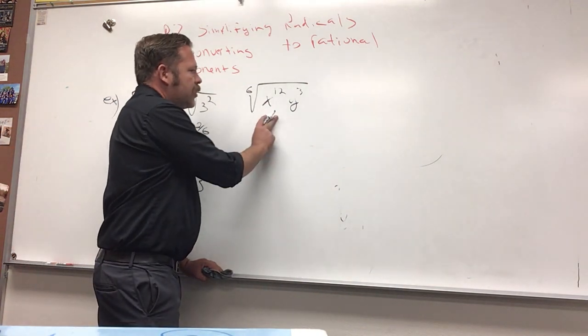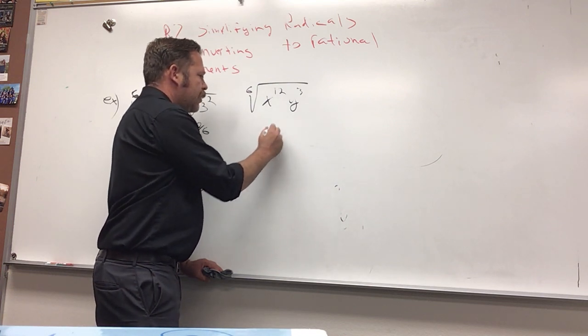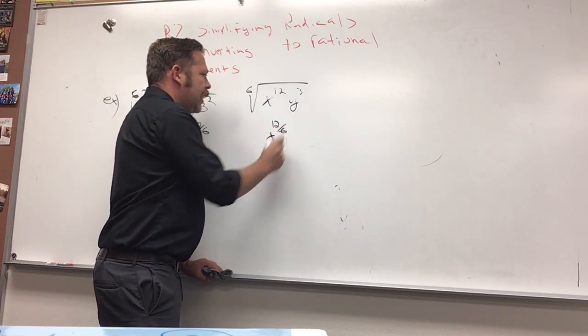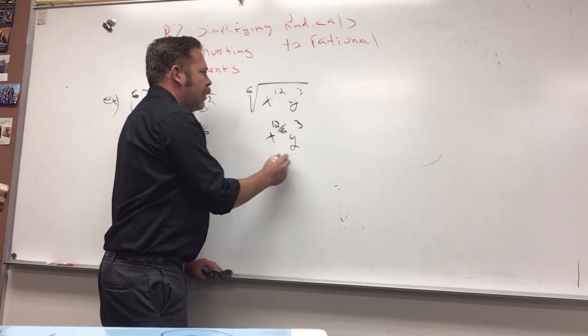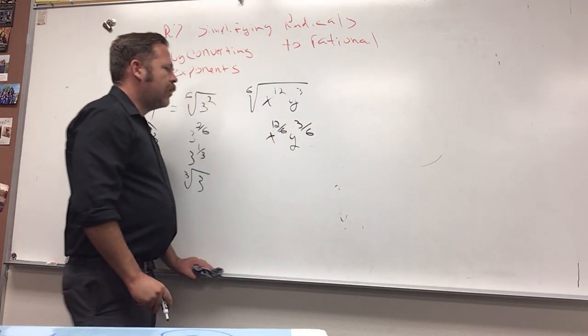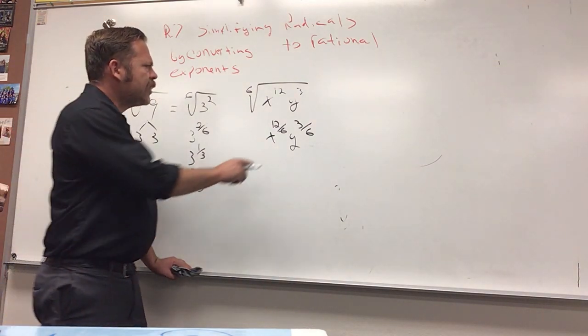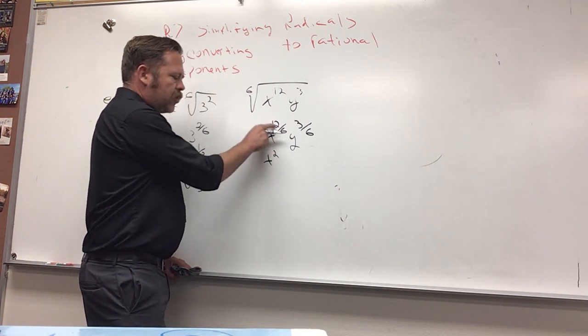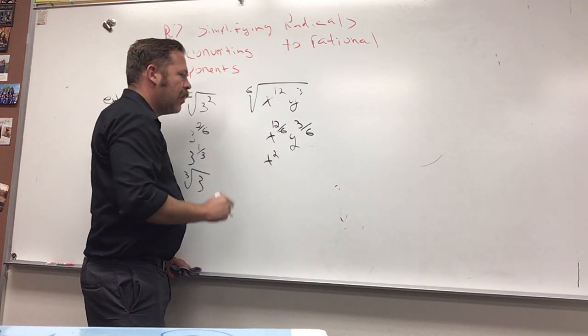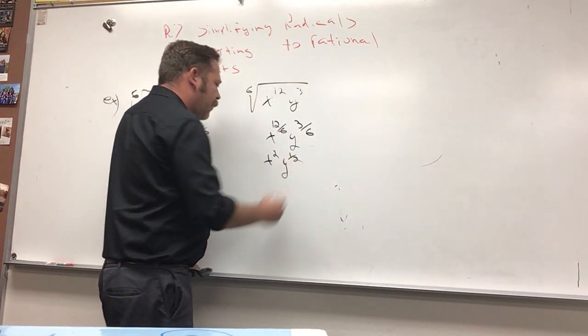So, check this out. If we convert this to exponential form, we would have, this is equal to x to the 12 over 6, and this is y to the 3 over 6. We can simplify both of these fractions. The first one simplifies to x to the second power, 12 over 6 simplifies to the second power. The second one simplifies to y to the 1 half.